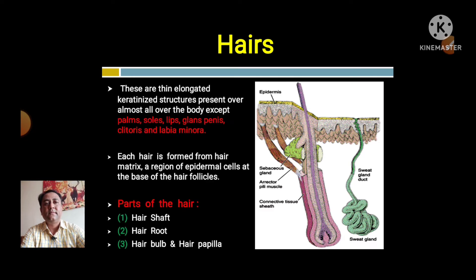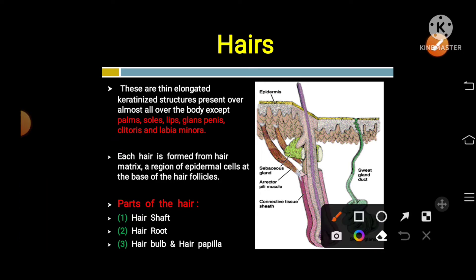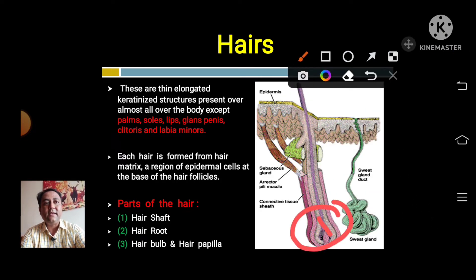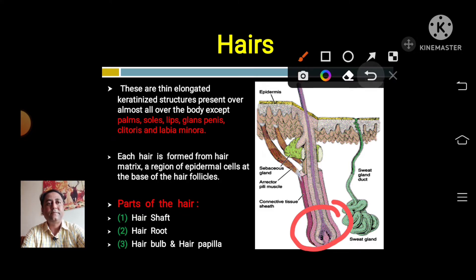The second appendage is hair — thin elongated keratinized structures present over almost all of the body except the palms, soles, lips, glans penis, clitoris, and labia minora. Each hair is formed from the hair matrix, a region of epidermal cells at the base of the hair follicle. Each hair has a shaft, a root, a bulb, and a papilla.